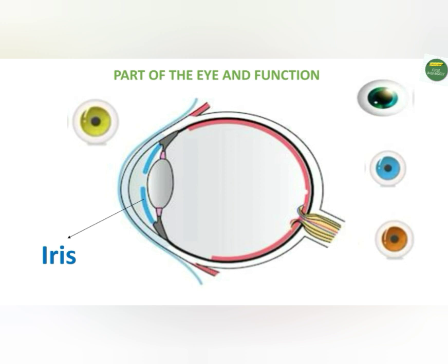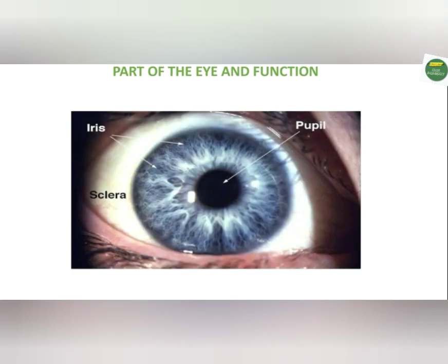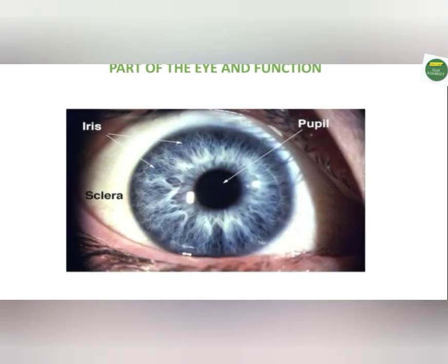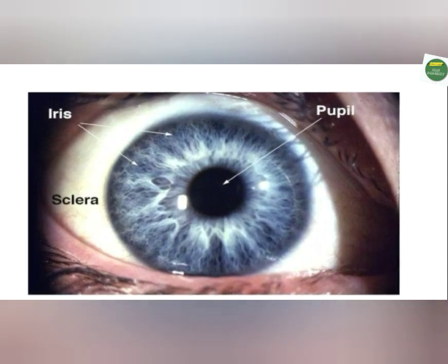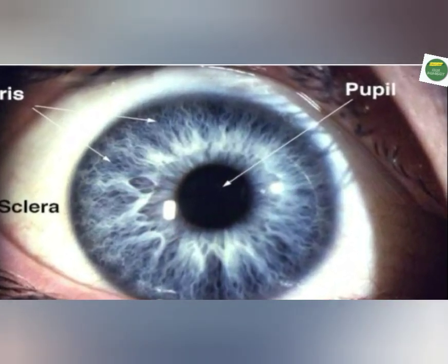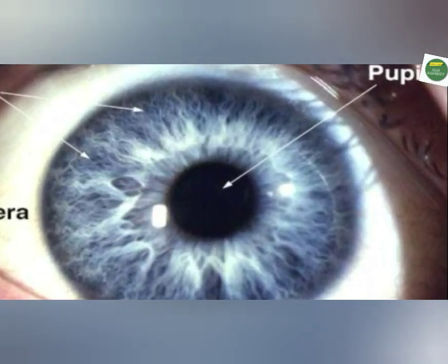The pupil is found right at the midpoint of the iris. It isn't a structure but simply an opening that allows light through to the lens of the eye. The pupil is the black portion found at the center of the iris.